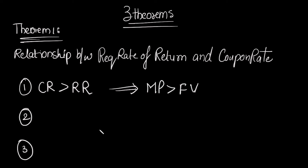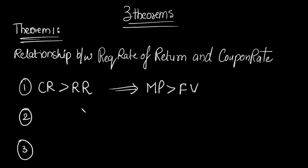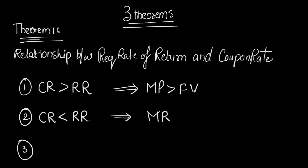Remember this order: if coupon rate is greater than required rate of return, market price is greater than face value. If you interchange these terms it may cause confusion, so keep the order clear. Similarly, if coupon rate is less than required rate of return, market price will be less than face value. And if coupon rate equals required rate of return, market price will be equal to face value.